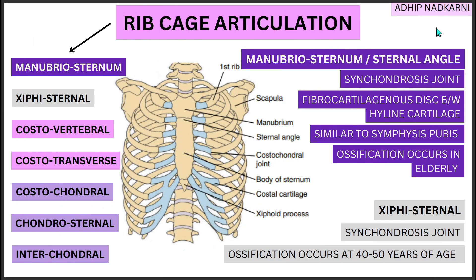Today we are going to cover the ribcage articulations present at the ribcage. We will cover the first four: the manubriosternal, xiphisternal, costovertebral, and costotransverse joints.